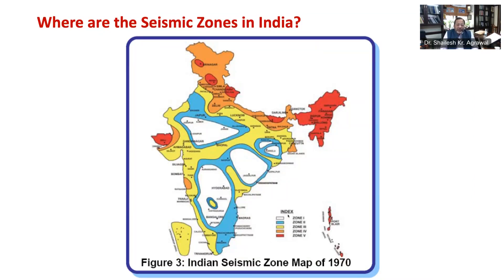The varying geology of different locations in the country implies that the likelihood of damaging earthquakes taking place at different locations is different. Therefore, a seismic zoning map is required to identify those regions. Based on the level of intensities sustained during damaging past earthquakes, the 1970 version of the zoning map divided our country into five zones.